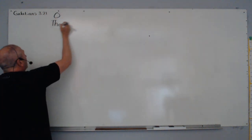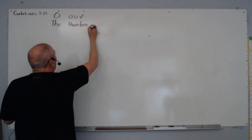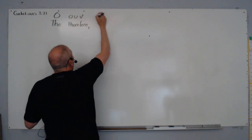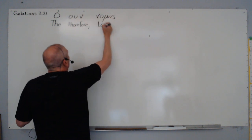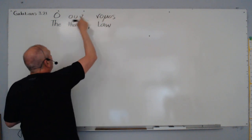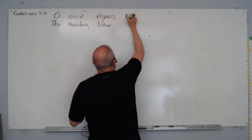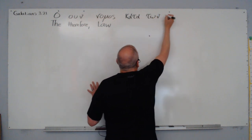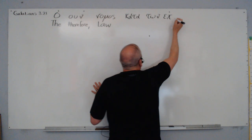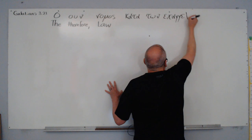And he's making a conclusion here. Therefore, the law - nomos - definite article. Therefore, the law, and he's asserting here, kata ton epi on galeon. So kata.